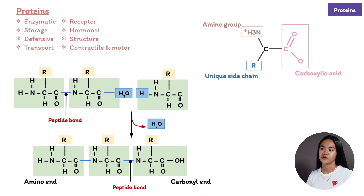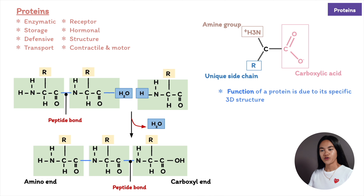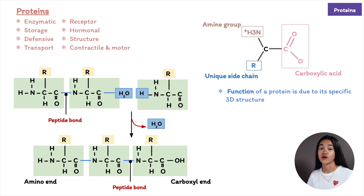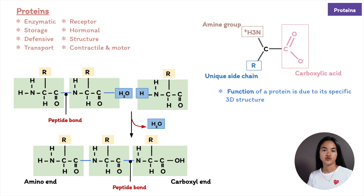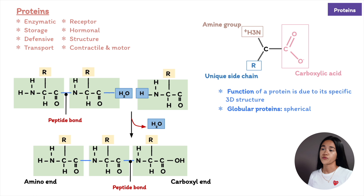The components of the side chain determine the properties of a particular amino acid, which influences its functional role in a polypeptide. One class of amino acids has non-polar side chains, making them hydrophobic; another class has polar side chains, making them hydrophilic. The function of a protein is due to its specific 3D structure, and the amino acid sequence of each polypeptide is what determines that 3D structure. Many proteins are spherical and are called globular proteins, or shaped like long fibers and called fibrous proteins.